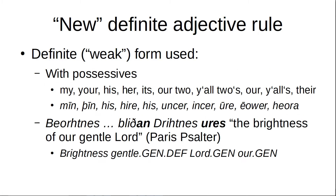The next place that you would use the definite form is with possessives — my, your, his, her, its, our, your (plural), their — in Old English: Meen, Theen, His, Hire, His, Unker, Inker, Ure, Ewer, Hora. Here's an example: Berchtnes blidandrichnes ures — 'the brightness of our gentle lord,' from the Paris Psalter, which is poetic, so it's in a bit of a weird order. You could, of course, put ures right after berchtnes and then it would be a bit more normal.